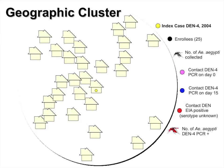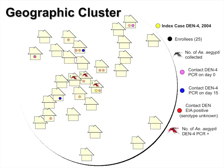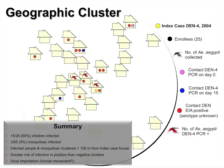Here's an example of what one cluster looked like. A child was infected with dengue 4 in 2004 — that's the actual distribution of houses. Black dots represent the additional children recruited. A mosquito icon in the roof meant we collected a female Aedes aegypti there, and the number indicates how many. Pink and blue dots indicate children in whose blood we detected virus at day 0 or day 15. Red indicates where infected mosquitoes were found, and red dots for children detected by antibody. In this particular cluster, 60% of the children were infected in a two-week period, and only 5% of mosquitoes we detected were infected — consistent with what I was saying: you don't need many of them to infect a lot of people.